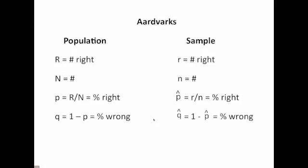Now you've begun to understand some of the terms and definitions used in binomial distributions. Good luck. Now you know your P's and Q's. This is the old dog again, coming to you from the dog cave at A&M Commerce. I want to encourage you as you work on binomial distributions: learn the terms. P is the percentage correct for the population; Q is the percentage wrong for the population. P-hat is the percentage correct for the sample; Q-hat is the percentage wrong for the sample. Good luck — I'll see you in a future lecture.